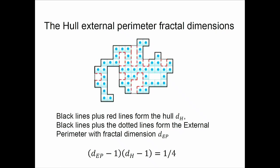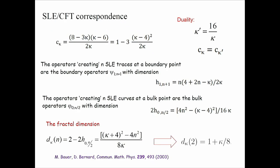The external perimeter will be less fuzzy than the hull. On this slide, I have all the results corresponding between SLE and CFT. I know that SLE is a conformally invariant model, so it has to be connected with conformal field theory, and it is connected through the central charge — as conformal field theory is only characterized by the central charge. You just give the central charge in the Virasoro algebra, and the rest follows.